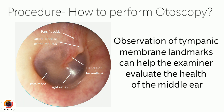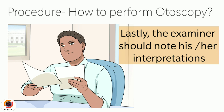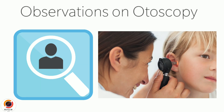Observation of tympanic membrane landmarks can help the examiner evaluate the health of the middle ear. Following the inspection of the tympanic membrane, the examiner can slowly remove the otoscope from the patient's auditory canal. Lastly, the examiner should note his or her interpretations. That was how the otoscopy exam is done. One difficult part for the examiner is to make out the observations while seeing the structures via otoscope, so the key observations to be made part-wise are discussed further.